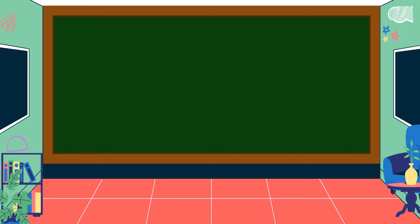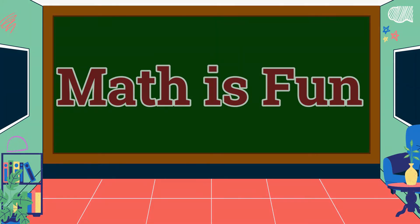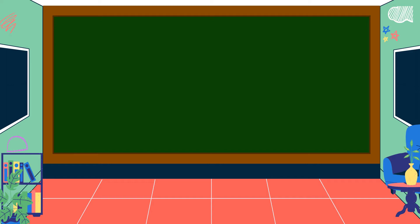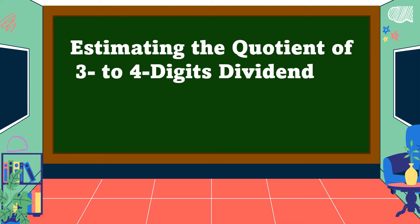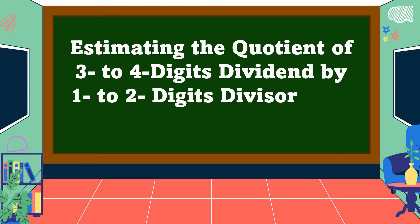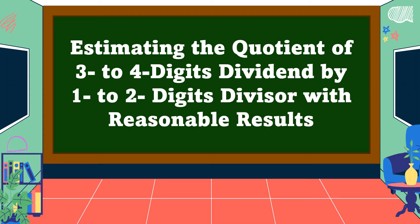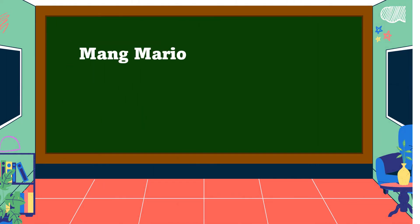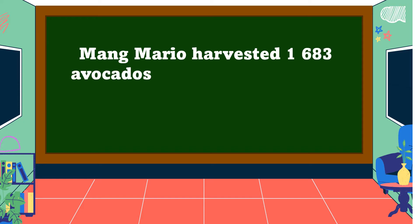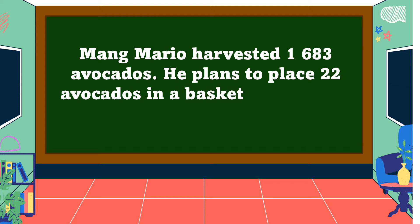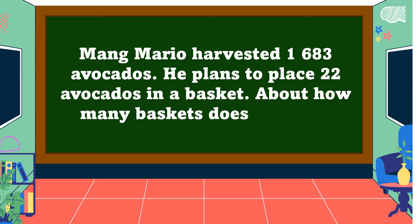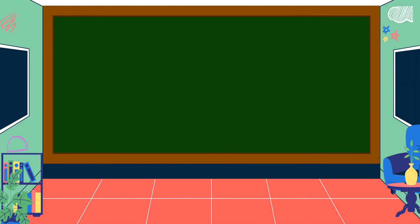Hello everyone, welcome to Math is Fun. Our lesson for today is all about estimating the quotient of three to four digit dividends by one to two digit divisors with reasonable results. This is our problem: Mang Mario harvested 1,683 avocados and he plans to place 22 avocados in a basket.